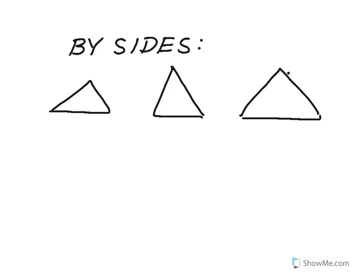There are two ways to classify triangles: one is by sides and the other is by angles. If we classify by sides, we're talking about how many congruent sides the triangle has. If I have no sides congruent, so all three side lengths are different, I call that a scalene triangle.